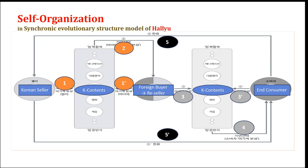Without intentional interference from the outside, system elements such as sellers, buyers, K-Culture contents, market, etc., make their own structure and create a new order. This self-organization process gives birth to a new cultural order in the Asian market — Hallyu.